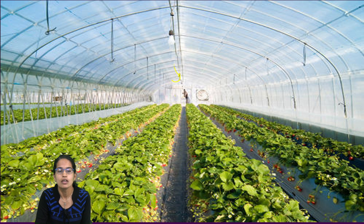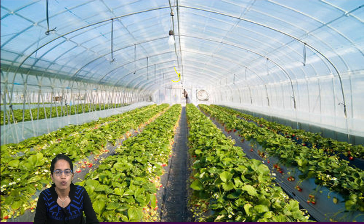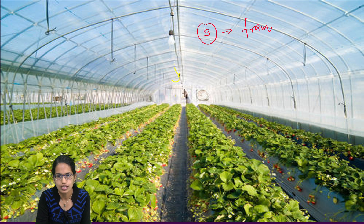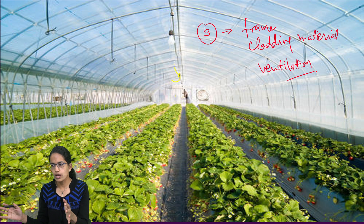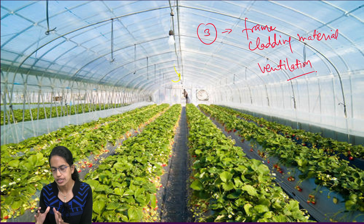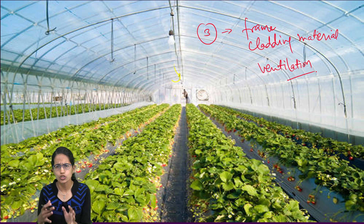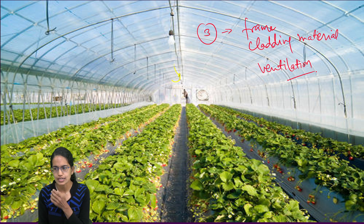Here we have a greenhouse which indicates a protected environment, and it has three main components. The first component is the frame — that's the outer layer. The next is the cladding material, and the third one is the ventilation. The frame or structure is important and various factors can affect the crop, which can be wind, rain, soil, snow, precipitation, or any kind of chemical or physical factors involved.